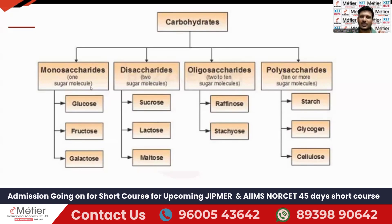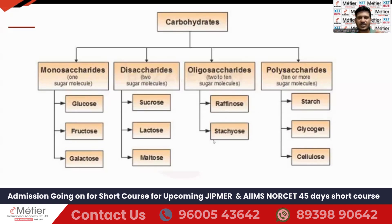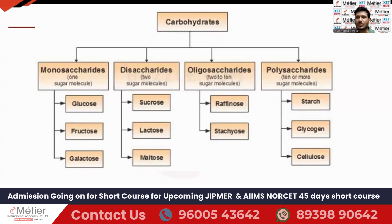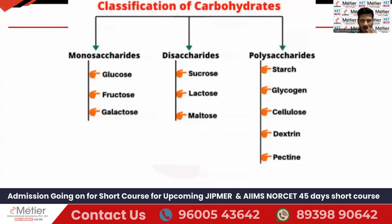Monosaccharide means only one sugar molecule — examples include glucose, fructose, and galactose. Oligosaccharide is less commonly heard but very important — two to ten sugar molecules, examples are raffinose and stachyose. If you know all these classifications, it will be very easy to answer exam questions about which compound belongs to which category.